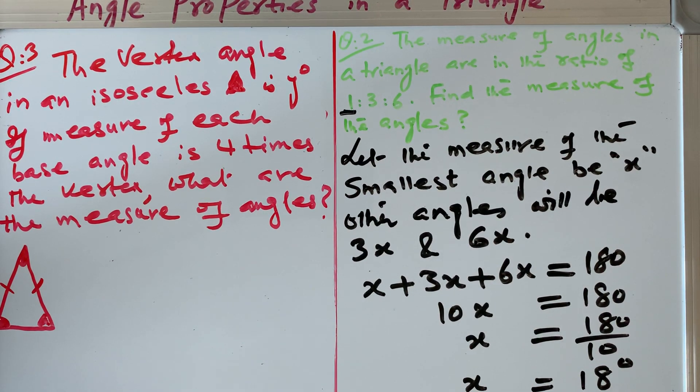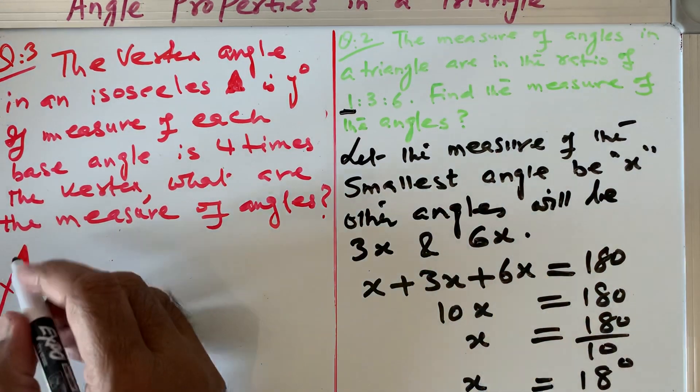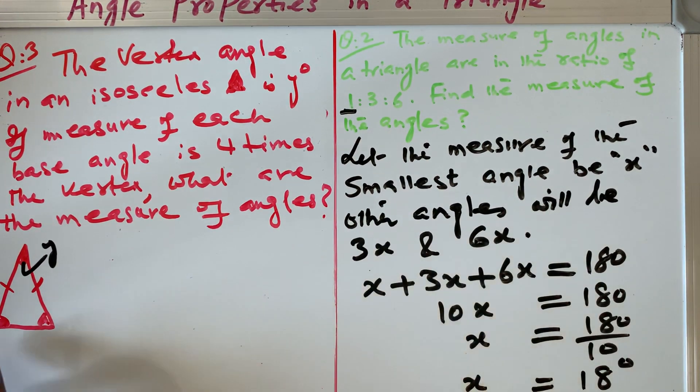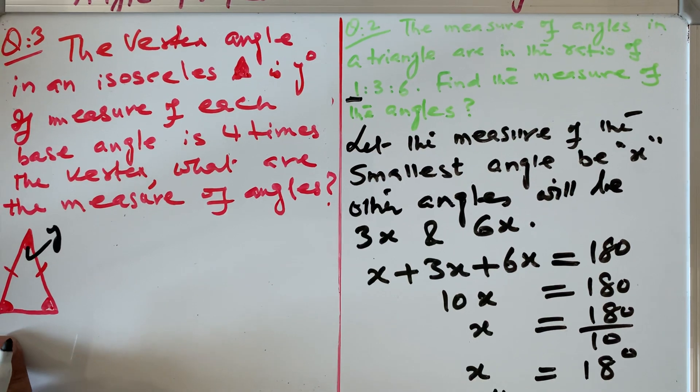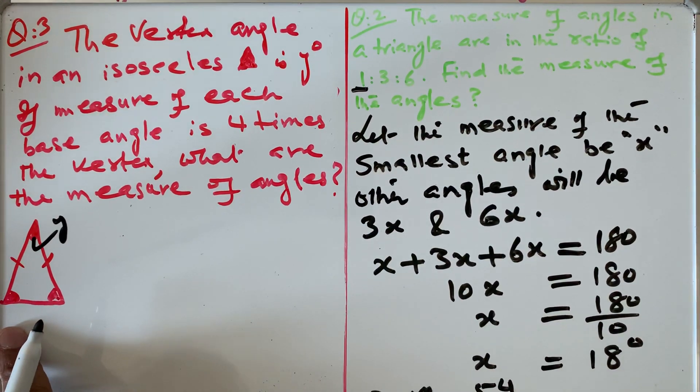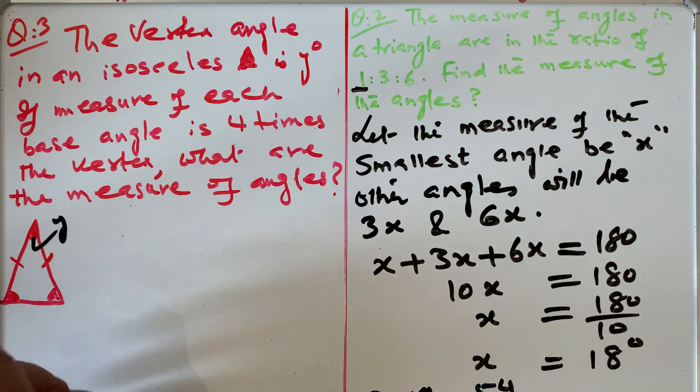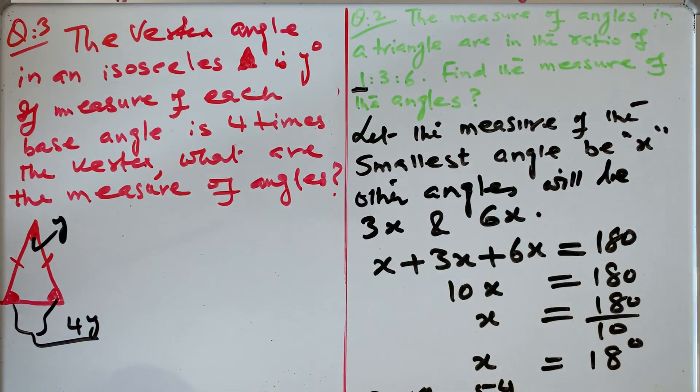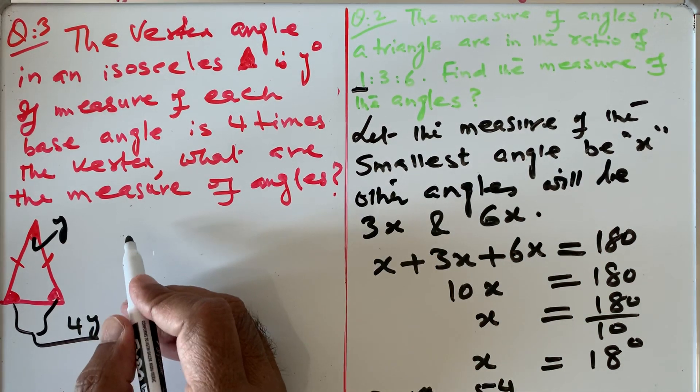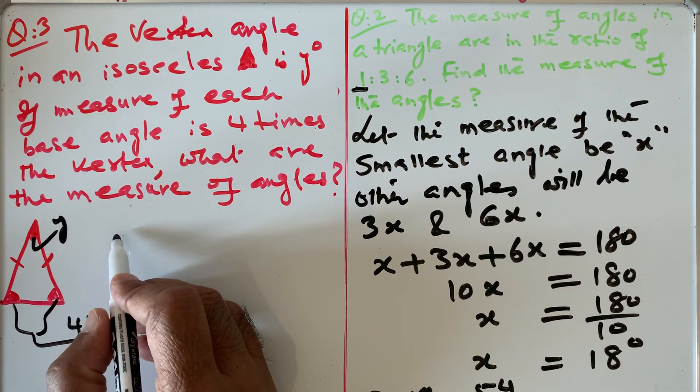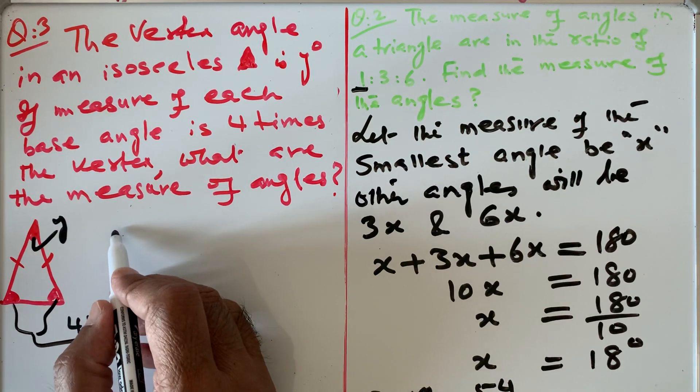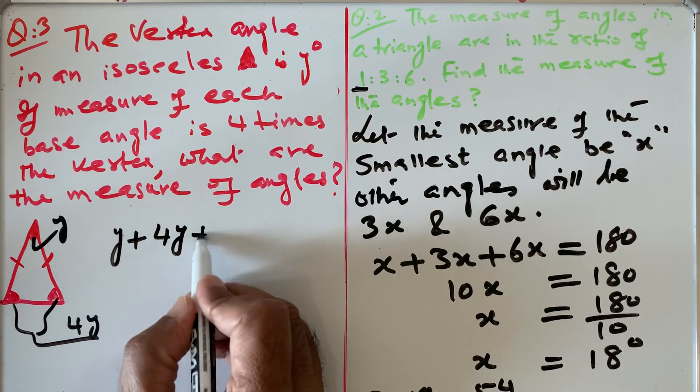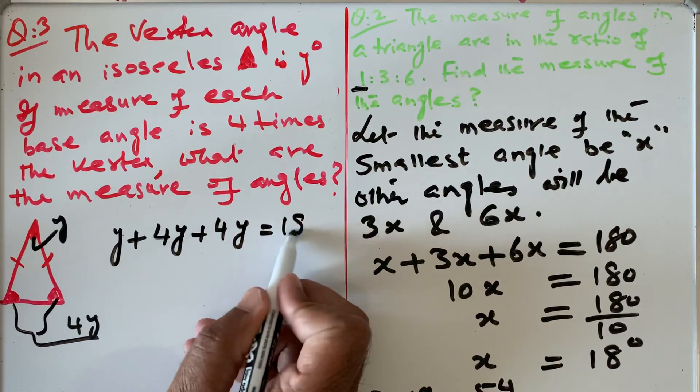What is the question saying? The question is saying that my vertex is y, and the measure of each base angle is 4 times the vertex. So that means these angles are 4y each. So what do we know? We know from this lesson that the sum of all interior angles of any triangle equals 180.